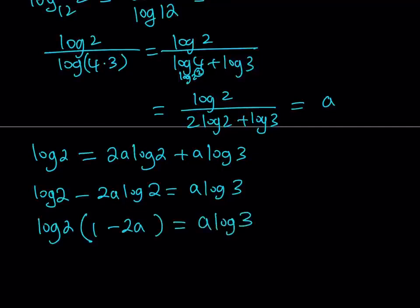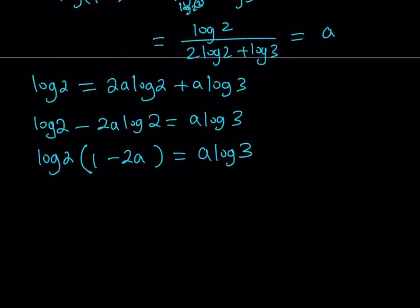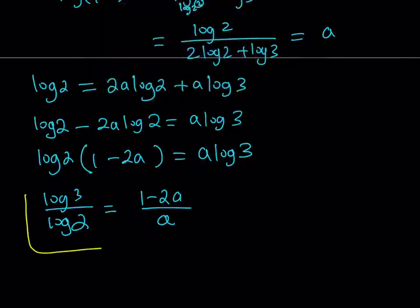And then finally, so here's my goal to find the ratio of log 3 and log 2. Later on, this is going to be helpful. I'll show you how. But let's go ahead and find log 3 over log 2 from here. If you divide, do all the necessary arrangements, you get 1 minus 2a over a. So I was able to get log 3 over log 2 in terms of a.